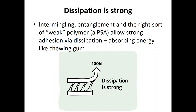The reason entanglement is strong is because dissipation is strong. What we are fighting against is the propagation of a crack. If a crack tries to travel along an interface, all the energy of that crack is absorbed in a few nanometres of entangled material — or, for a weak polymer like a PSA, absorbed over microns or millimetres of distorting polymer. It's like chewing gum stuck to the sidewalk: a lot of energy is absorbed by the soft polymer. If we spent more time talking about entanglement and dissipation rather than surface energy, we'd advance our adhesion much more.